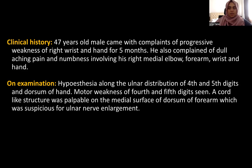On examination, he had hypoesthesia along the ulnar distribution of the 4th and 5th digits and dorsum of hand. Weakness of 4th and 5th digits were seen, and a cord-like structure was palpable on the medial surface of the dorsum of forearm, which was suspicious for ulnar nerve enlargement.